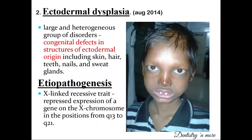The next favorite question in dermatological disorders is ectodermal dysplasia. As the name suggests, it affects structures of ectodermal origin. It is a congenital defect seen in structures of ectodermal origin including the skin, hair, teeth, nails, and sweat glands. The etiopathogenesis involves an X-linked recessive trait — repressed expression of a gene on the X chromosome at position q13 to q21.